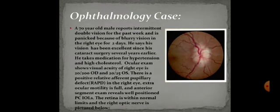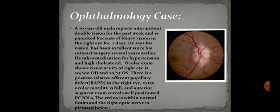This is the ophthalmology case. A 70-year-old male reports intermittent double vision for the past week and blurry vision in the right eye for two days. His vision had been excellent since cataract surgery several years earlier. He takes medication for hypertension and high cholesterol. Ocular exam shows visual acuity of 20/200 OD and 20/25 OS. There is a positive relative afferent pupillary defect in the right eye. Extraocular motility is full and anterior segment exam reveals well-positioned PCIOLs. The retina is within normal limits and the right optic nerve image is shown.